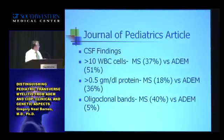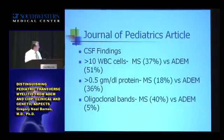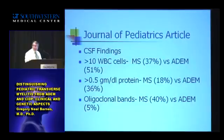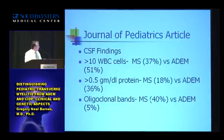The spinal fluid is also predictive as to whether you have ADEM or multiple sclerosis. Inflammation is usually higher in ADEM, and the protein is usually higher as well. These immunoglobulins — the production of these proteins from B cells — is much more common in multiple sclerosis than it is in ADEM.